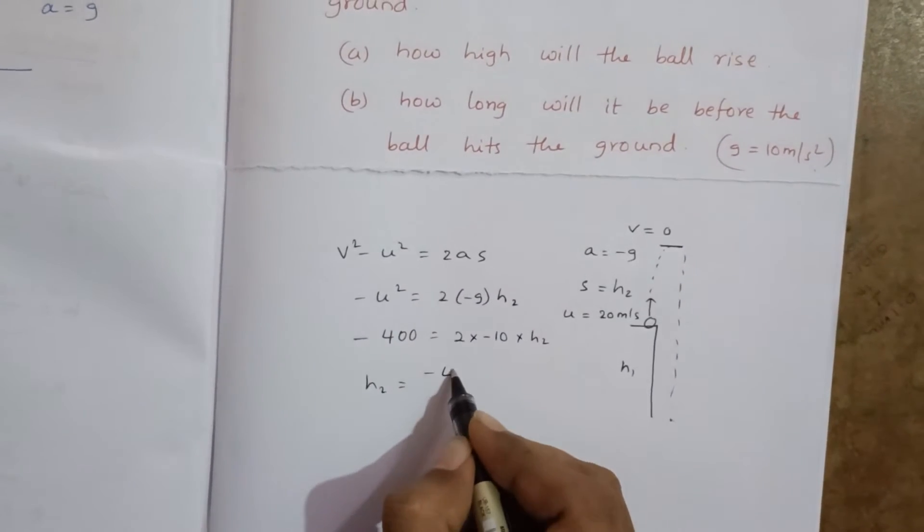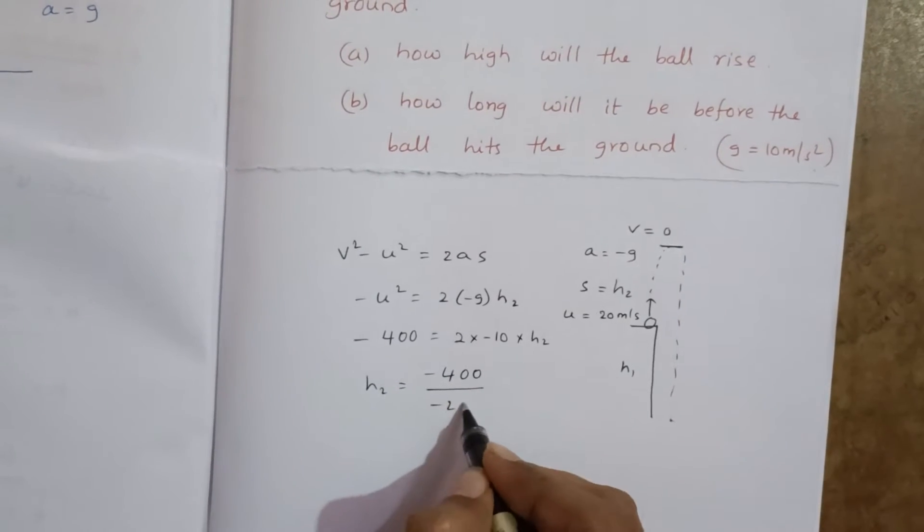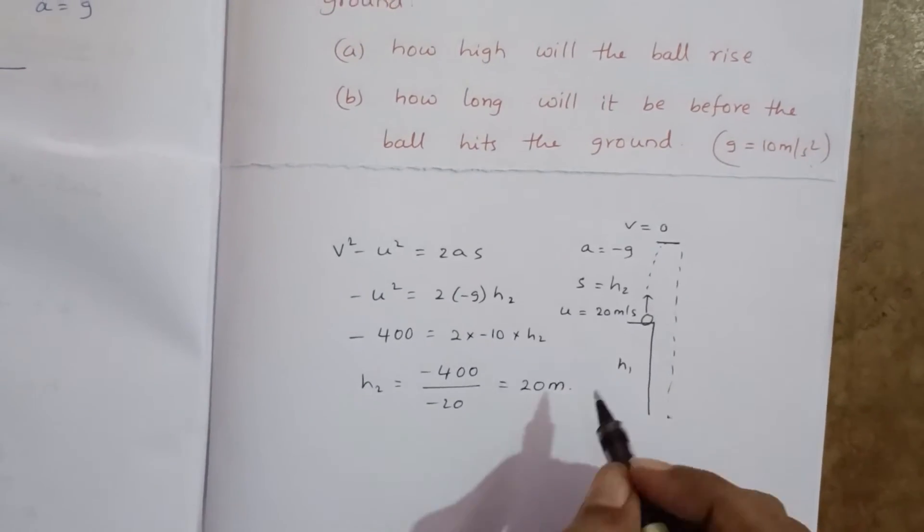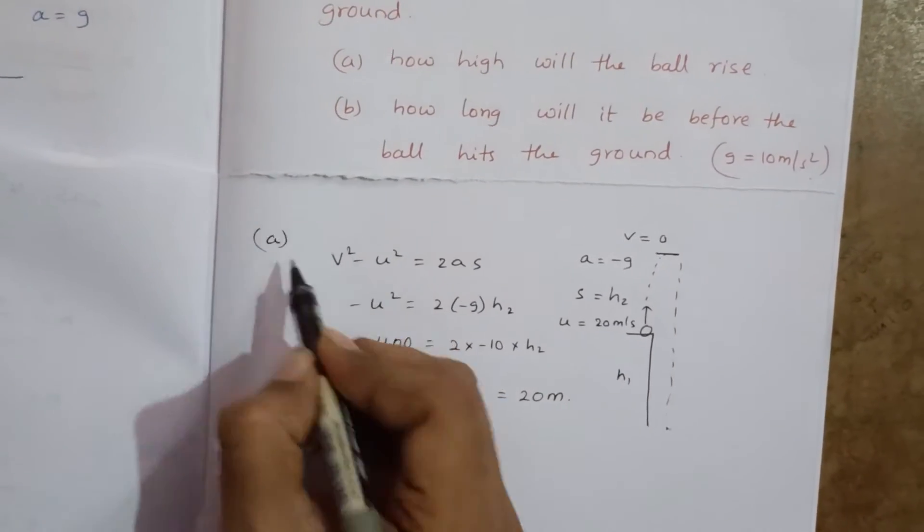So h₂ equal to minus 400 by minus 20, minus minus cancel, 20 meters it will rise. So it will go 20 meters height.